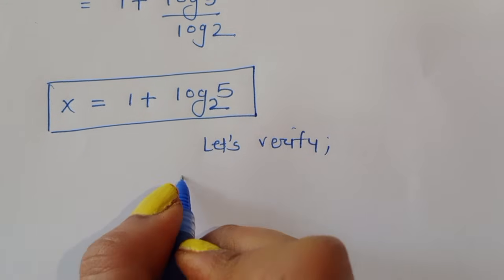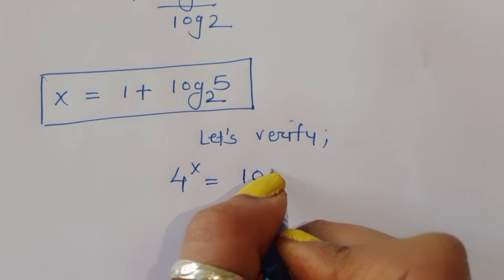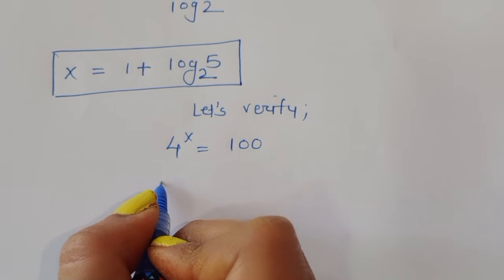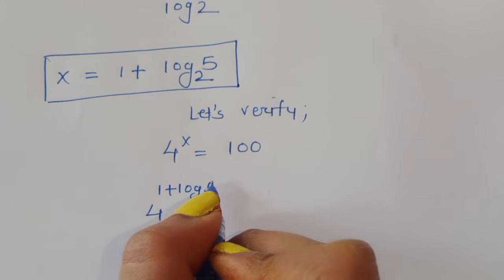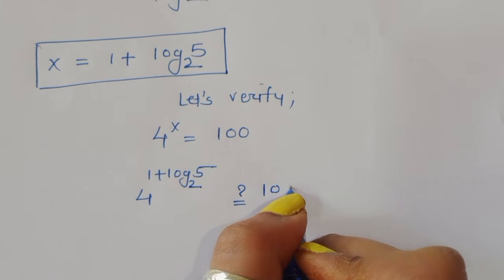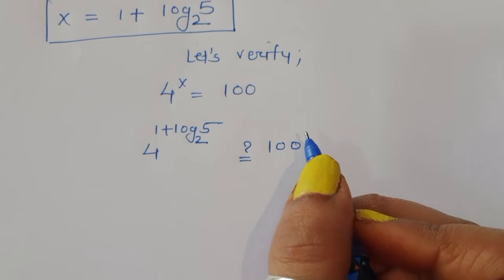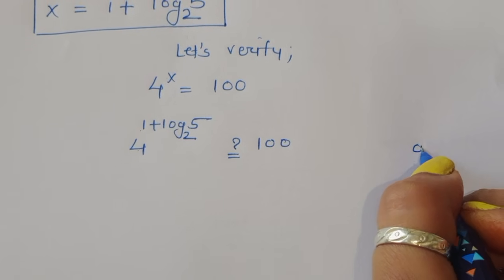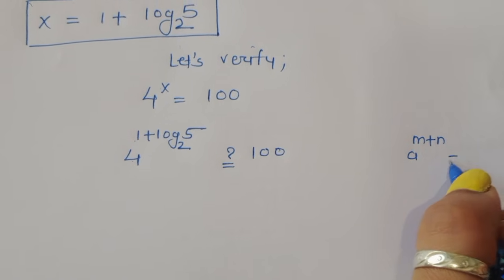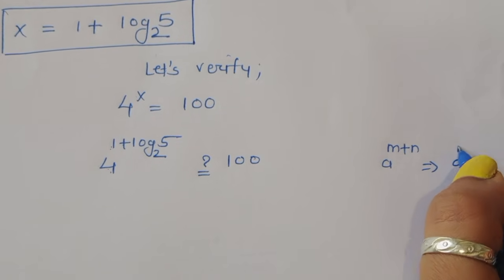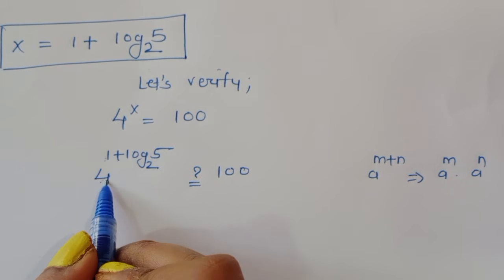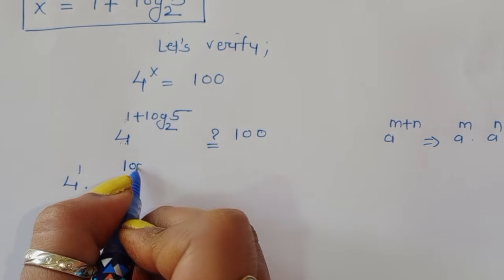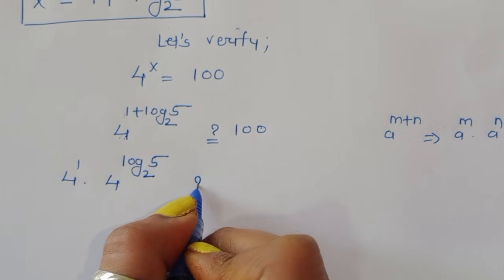The question is 4 power x equals 100, and we have to verify that x equals 1 plus log of 5 to the base 2. So 4 power (1 plus log of 5 to the base 2) should equal 100. Using the exponent rule — a power (m plus n) equals a power m times a power n — we get 4 power 1 times 4 power log of 5 to the base 2.